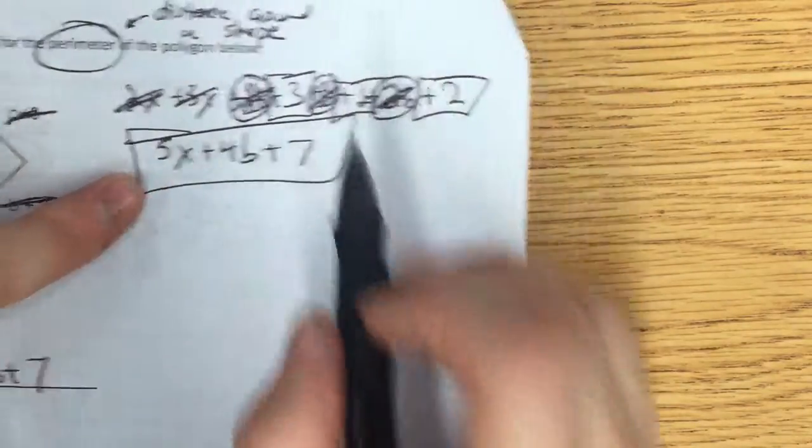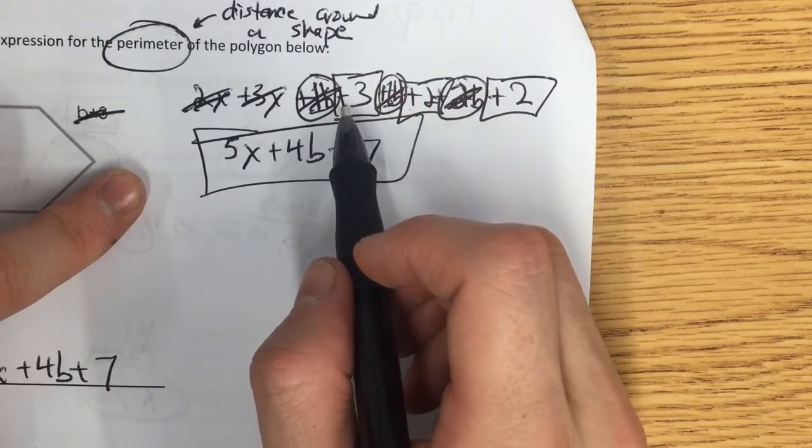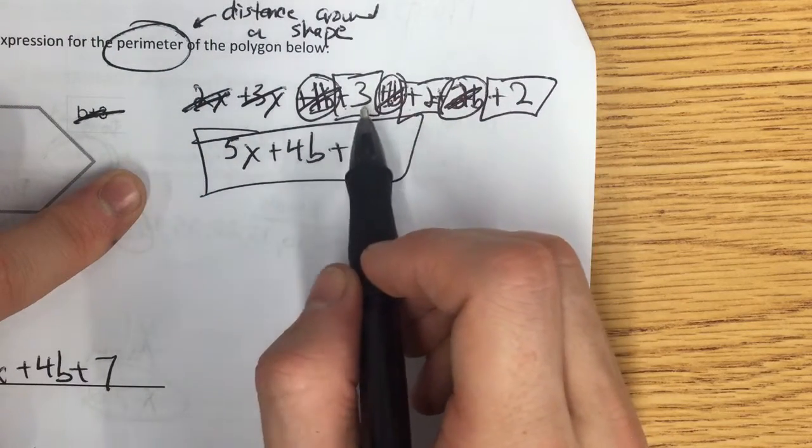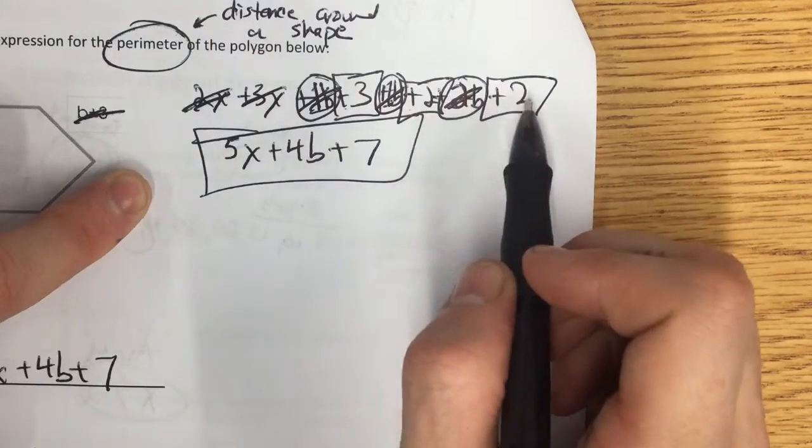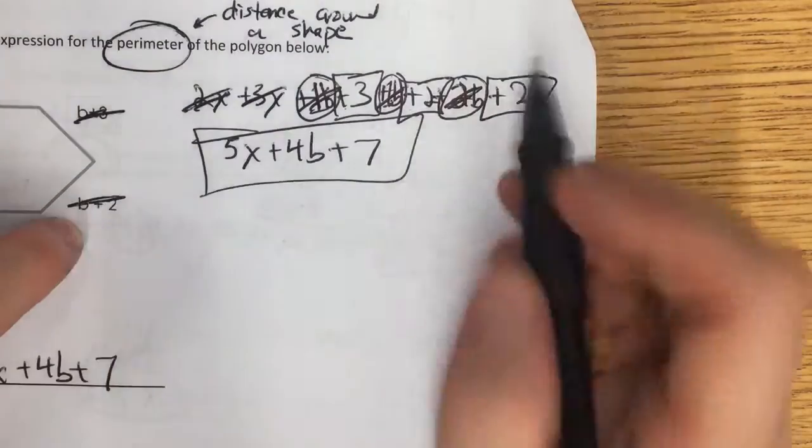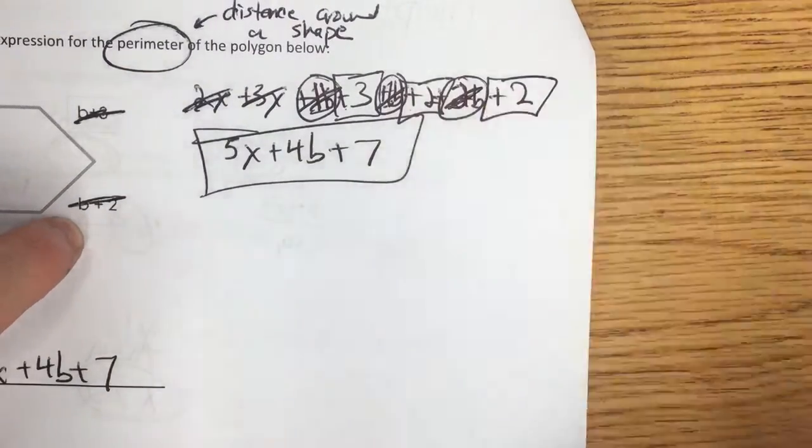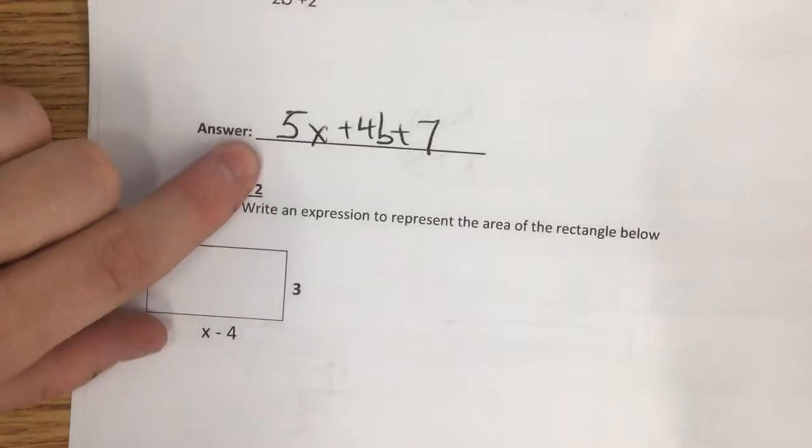You'll notice when I was boxing these numbers, I always box the sign and the operation that's in front of the number. So I said plus 3, plus 2, plus 2. If there had been a minus here, I would also include that in my box. Final answer, 5x plus 4b plus 7.